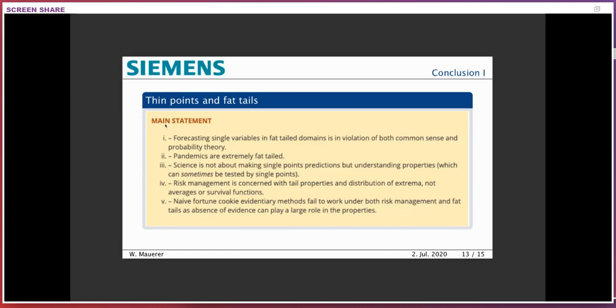His findings are that forecasting single variables in fat-tailed domains is in violation of both common sense and probability theory. Without going into what fat tails in statistics exactly means: basically you're observing parameters that are not uniformly or Gaussian-distributed but exhibit very skewed, unsymmetric distributions — the same thing occurs in measuring pandemics and in measuring many properties of open source systems. What you cannot do is make statements like 'the next bug will appear in precisely this spot' or 'a latency of 27 milliseconds will appear caused by this combination of input events.'